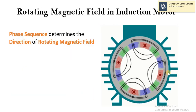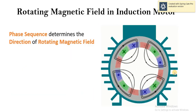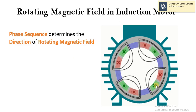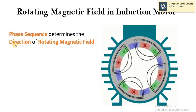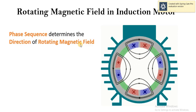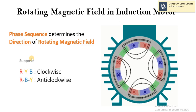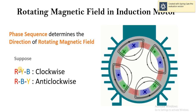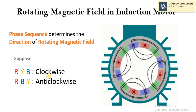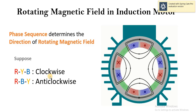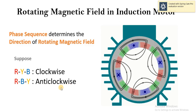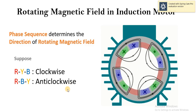Whenever the stator of an induction motor is energized by a three-phase supply, a rotating magnetic field is produced. The phase sequence of that three-phase supply determines the direction of the rotating magnetic field. Suppose RYB is the phase sequence responsible for clockwise direction of rotation, then RBY would be the phase sequence responsible for the anti-clockwise direction of rotation of the rotating magnetic field.